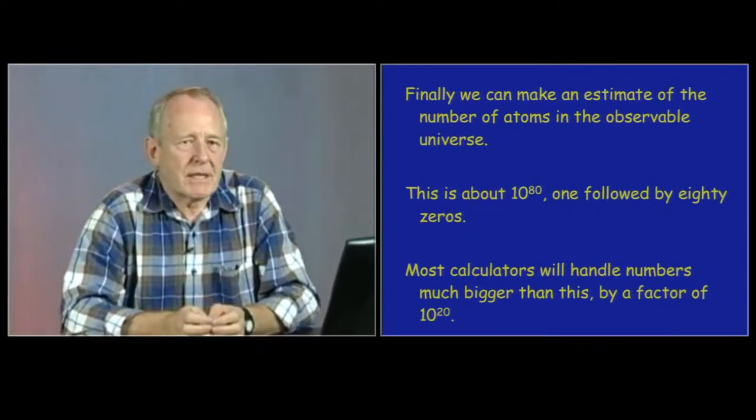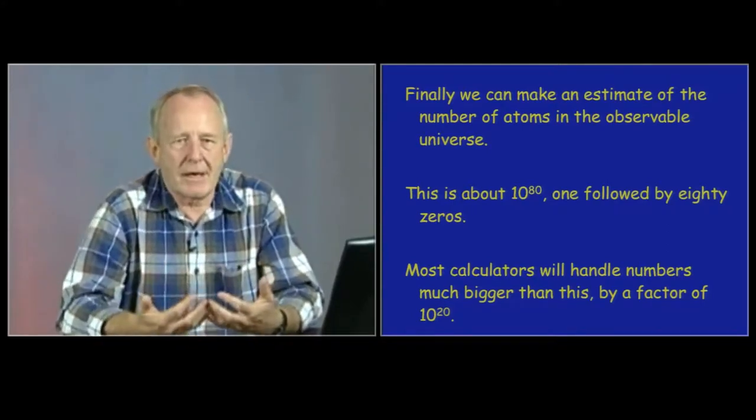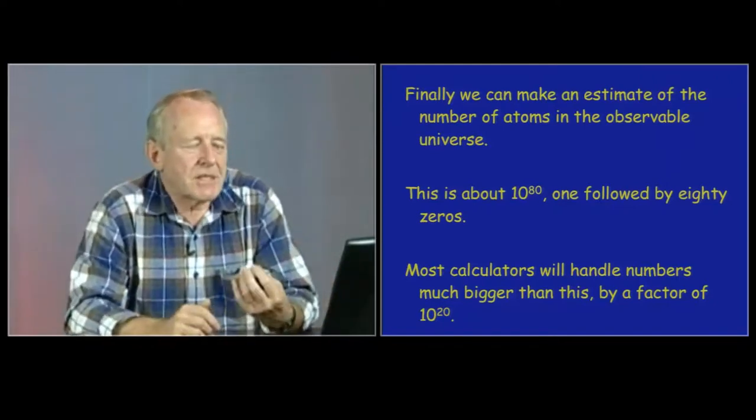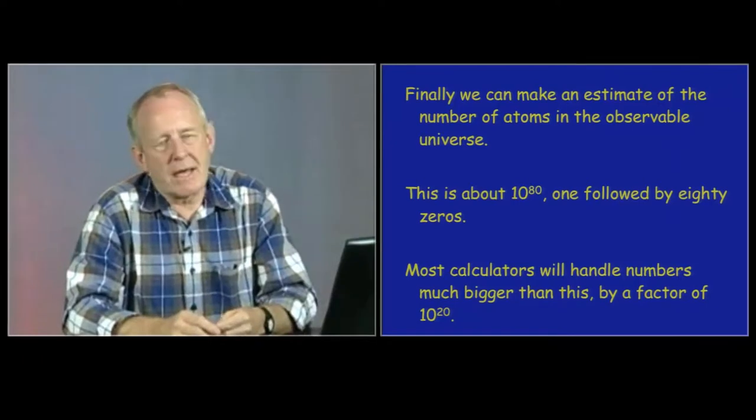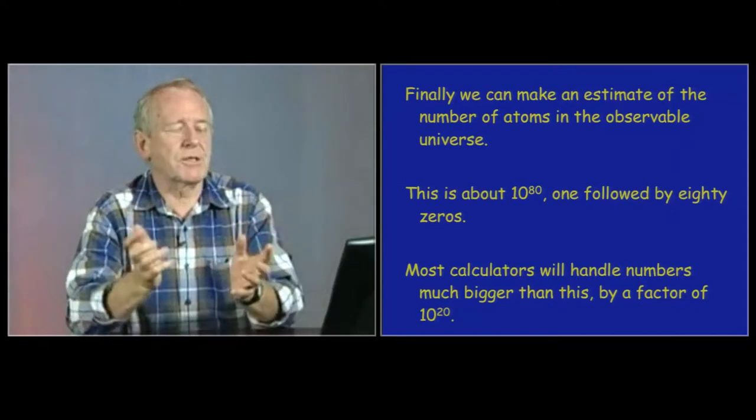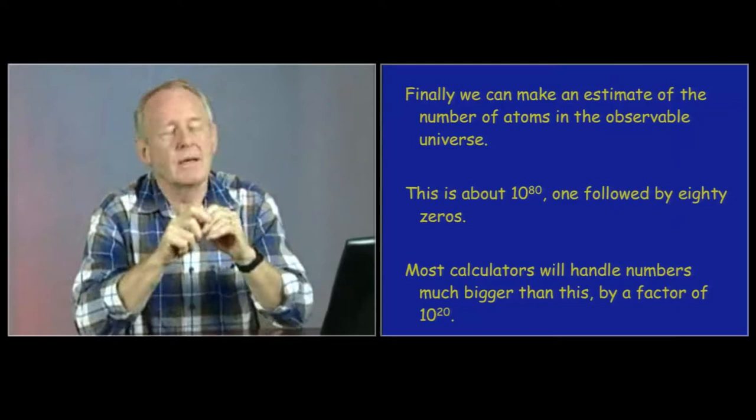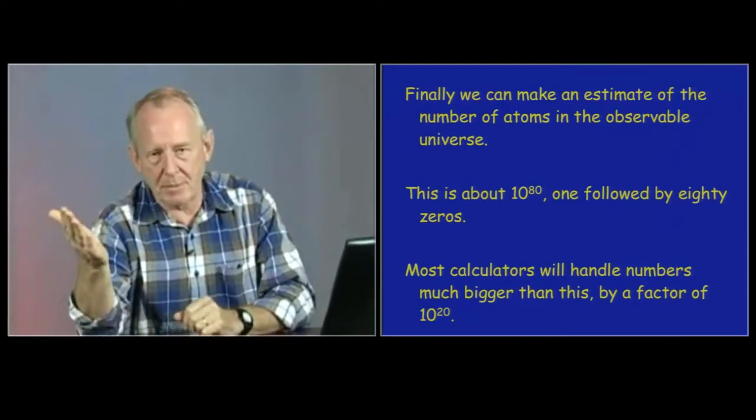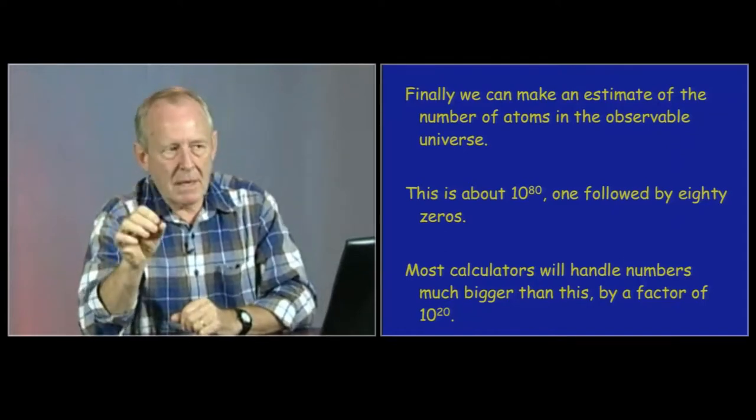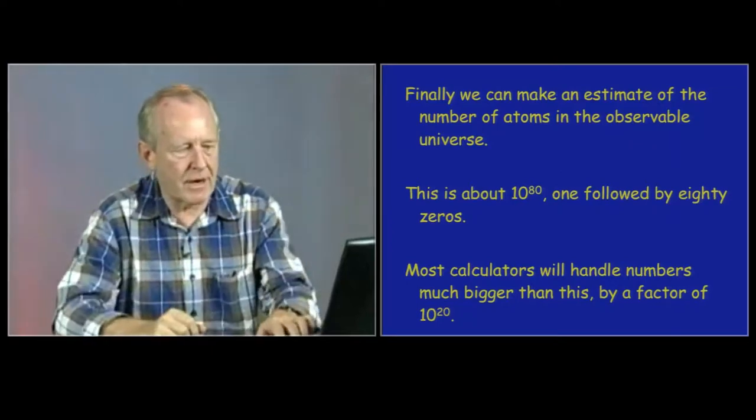Now, this is an interesting calculation. It's quite possible to make an estimate from the number of stars that we can see, the number of galaxies we can see, and knowing something about the sizes of atoms and the masses of stars, that there seem to be around about 10 to the power 80, that's 80 zeros, atoms within the universe that we can see. You think, that's a huge number. Well, yes, it is. But your calculator goes up to a number which is much, much bigger than that. A factor of 10 to the 20th. That's 100 million, million, million times bigger than 10 to the 80th. These numbers do get very big.